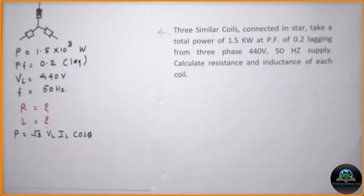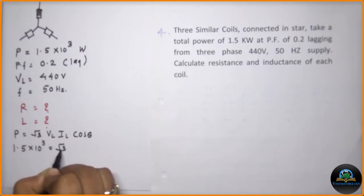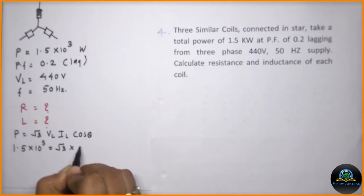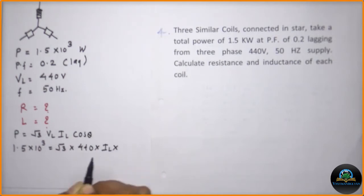Now from this point we will be getting the values. Power is equal to 1.5 into 10 raised to 3, which is equal to root 3, VL is given 440 volt, IL which is supposed to calculate, and cos theta which is 0.2.